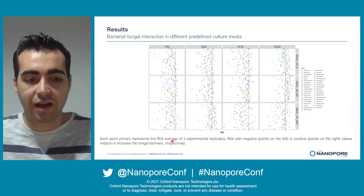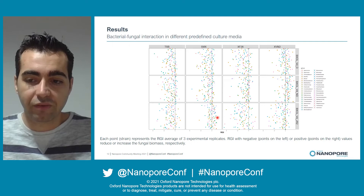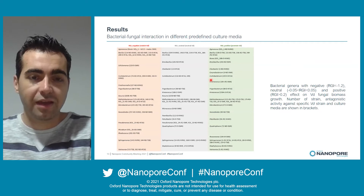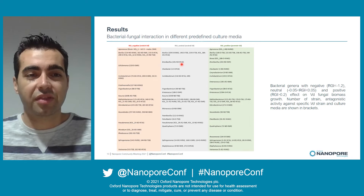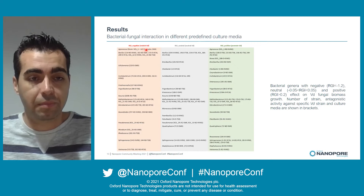The points on the left restrict the fungal biomass, and the points on the right increase fungal growth. We then selected from these results those strains with the highest effect on Verticillium. In this table, I show the number of strains and their antagonistic activity against each specific Verticillium strain.